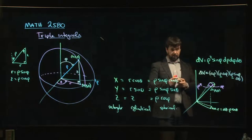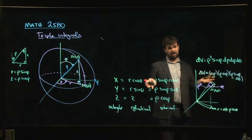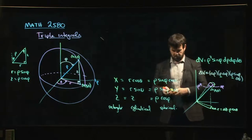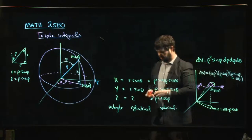And then d rho, d phi, d theta. Okay, like so. So it's a little bit more complicated than polar or cylindrical coordinates where there's just that extra r to keep track of. Now there's this whole piece that you have to keep track of. So that makes life a little bit more challenging.